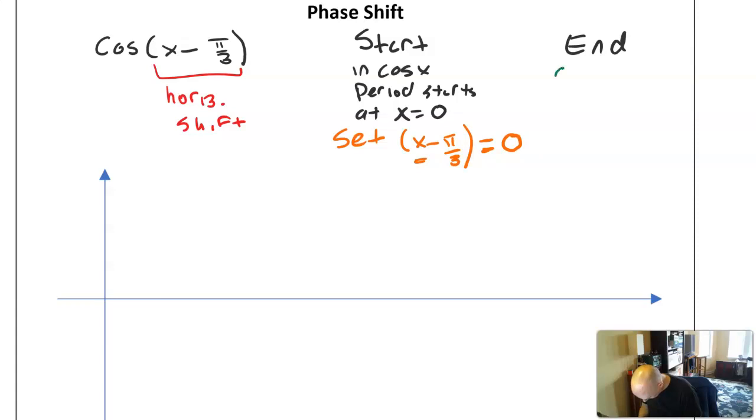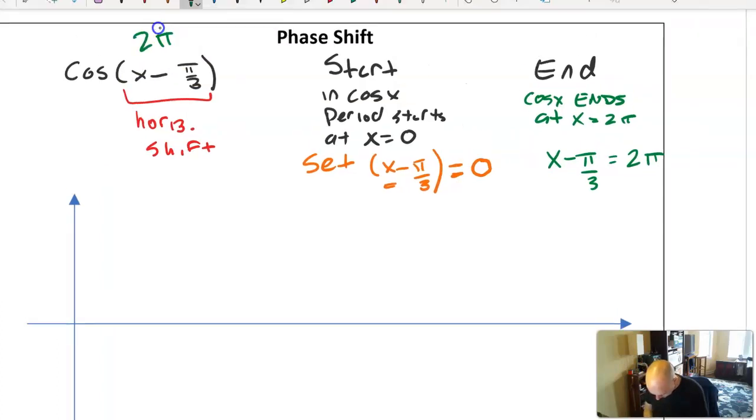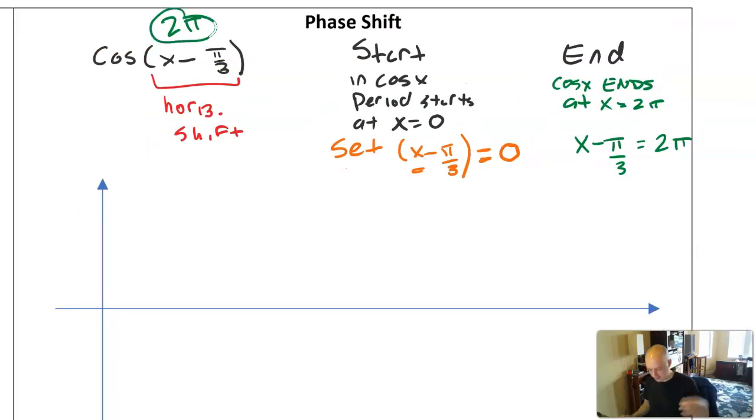And to find the end, the period in cosine x ends at x equals 2 pi. So if I'm going to set x minus pi over 3 equal to 2 pi. When I solve that, that'll tell me what puts a 2 pi into the argument. I don't have to use 0 and 2 pi, I could use 2 pi and 4 pi, but I really like using 0 because it's the easiest number to solve with.